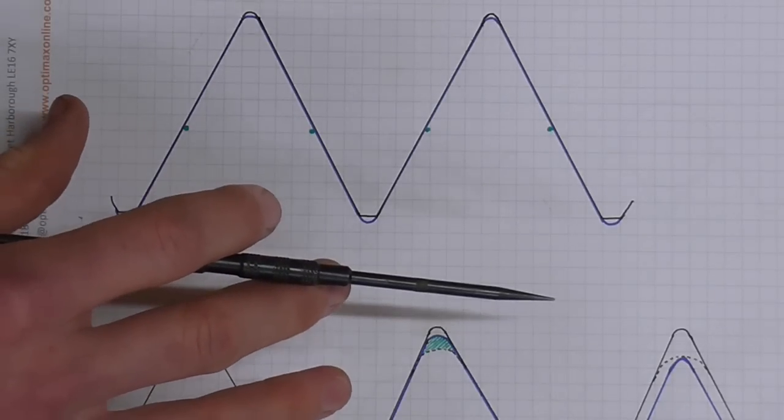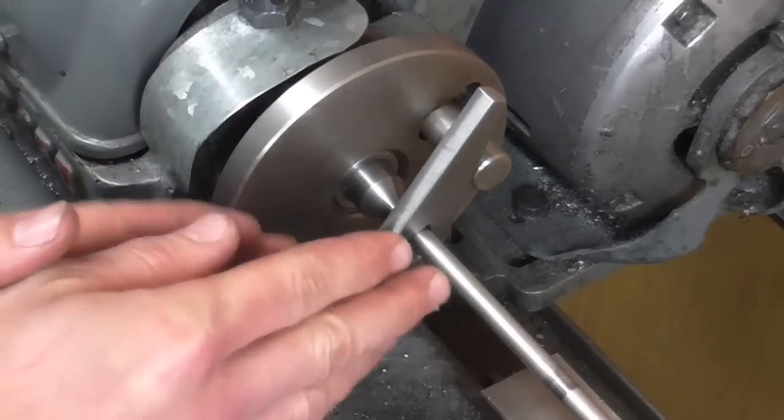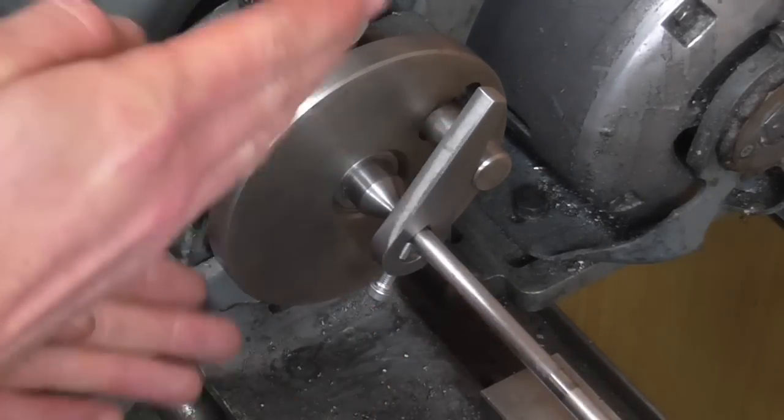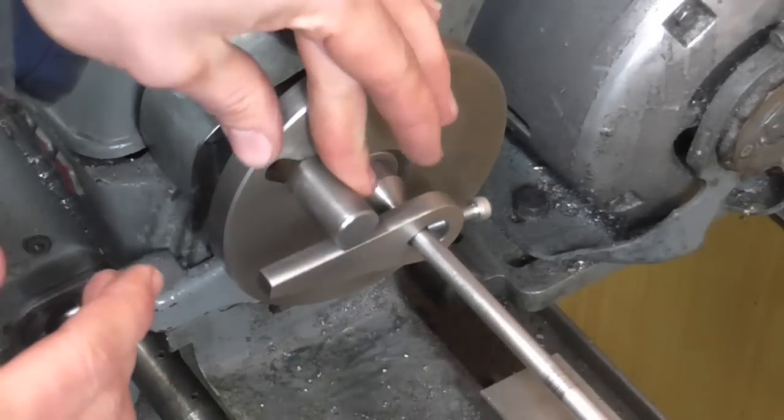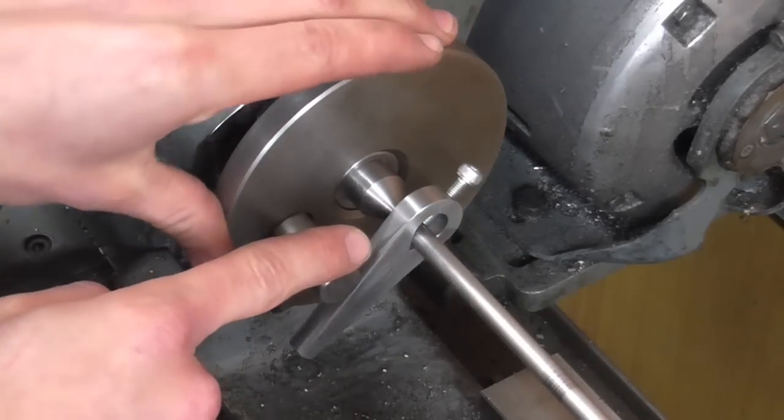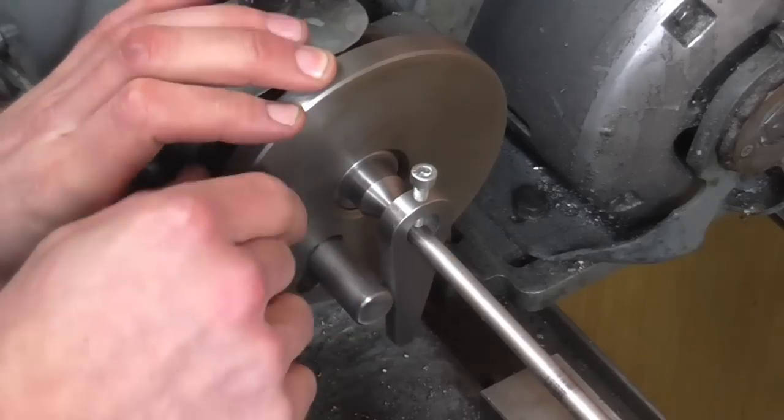Now finally I have a little topic on work holding that I rather embarrassingly totally missed in my video Pistons and Rods Part 3. It's an important detail. Knowing about it can save you some heartache. When turning between centers, you typically have the component, the drive dog, and the drive plate. The spindle turns and turns the drive plate, which drives the drive dog, which turns the component.